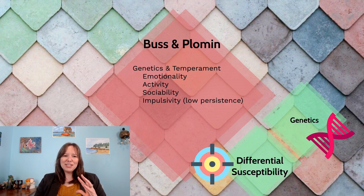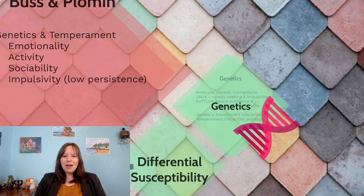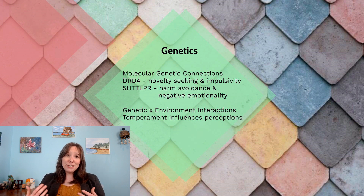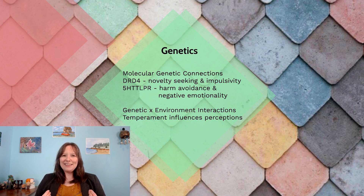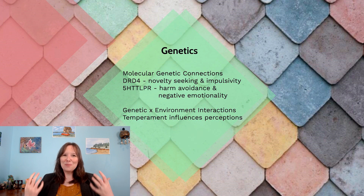Although there are similarities in the dimensions, what really makes this school of thought stand out is its applications to genetics, differential susceptibility, and epigenetics. The Buss and Plomin approach to temperament allowed us to start connecting temperamental traits to exact genes. The DRD4 gene, which associates with novelty seeking and impulsivity, links to what we know as the behavioral activation system — the idea that those who have more activity in their brain's pleasure circuit may be more impulsive and more goal-driven toward positive things.